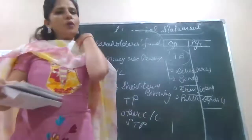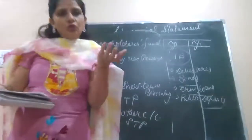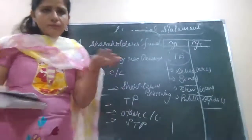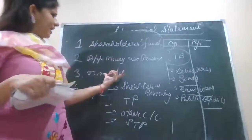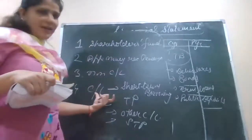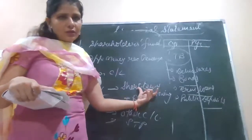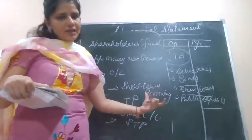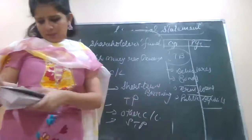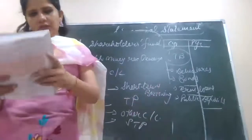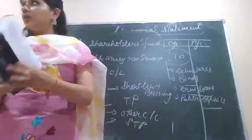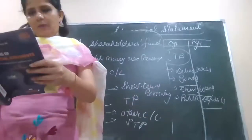For example, bank overdraft — where do you show it? Main heading is current liability and the subhead is short-term borrowing. That's how questions will be asked from you. The rest of the things we will continue in the next period.